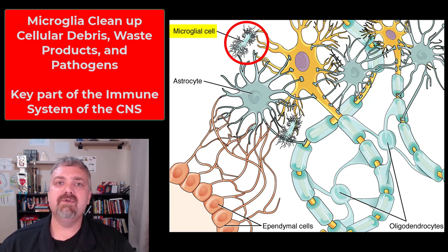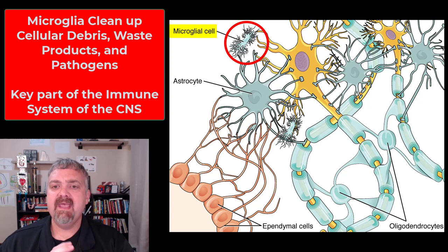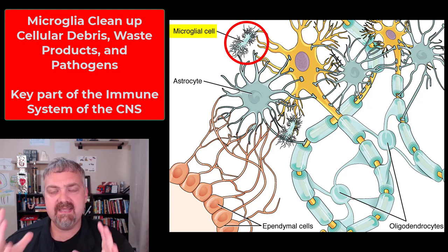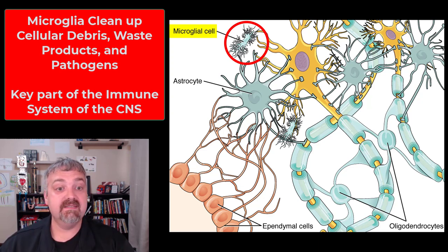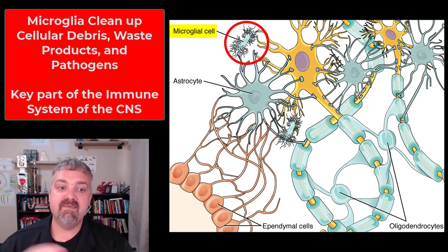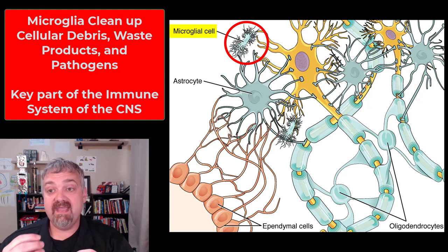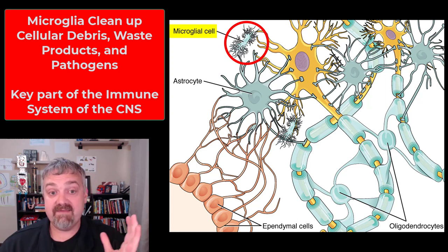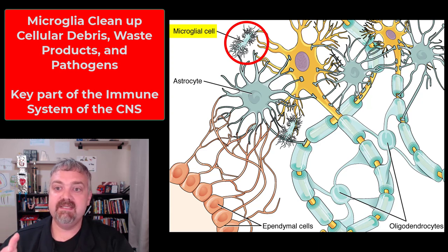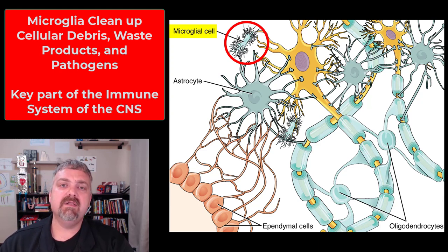The last neuroglial cell of the central nervous system is the microglia. These are small cells with fine branch processes on them. I consider them the immune system of the central nervous system. Because your other immune cells can't get into the CNS due to the blood-brain barrier, the microglia play a big role in engulfing debris, recycling things, cleaning up waste products, and killing and destroying pathogens. New research over the last few years shows that microglial dysfunction — if these cells become dysfunctional — can cause them to churn out inflammatory mediators, increase brain inflammation, and this has been linked to dementia, Alzheimer's, and other conditions.